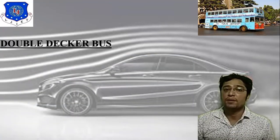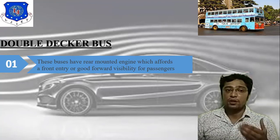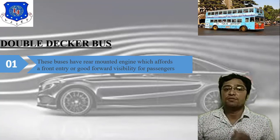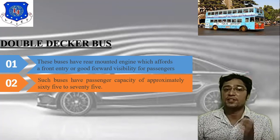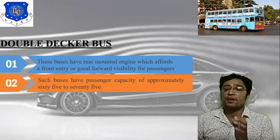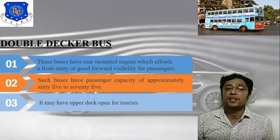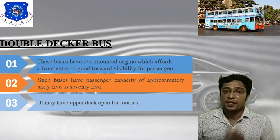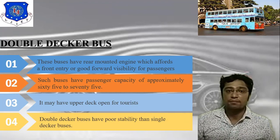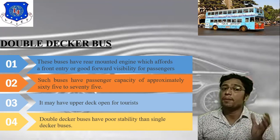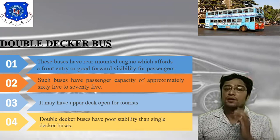The double deck bus has a rear-mounted engine, which affords a front entry and good forward visibility for passengers. Such buses have a passenger capacity of approximately 65 to 75. The upper deck may be open for tourists. Double deck buses have more stability than single deck buses, even though the overall height is increased.